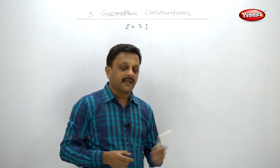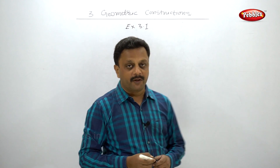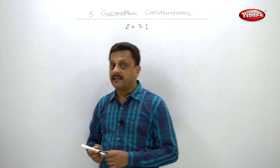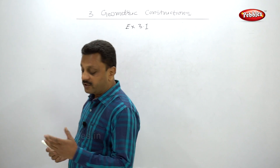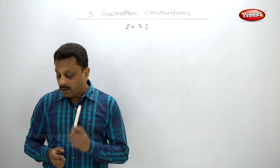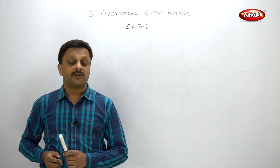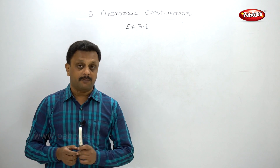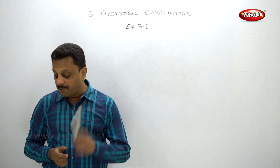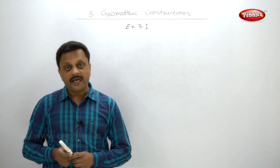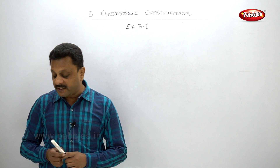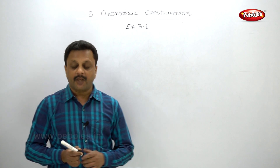Welcome back. Let us start Exercise 3.1 based on topic one: circumcircle and incircle. The first problem is to draw the circumcircle by constructing perpendicular bisectors to sides of triangle PMT, in which PM is 5.4, angle P is 60 degrees, and angle M is 70 degrees.